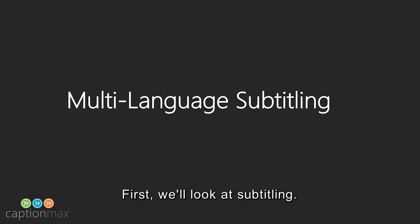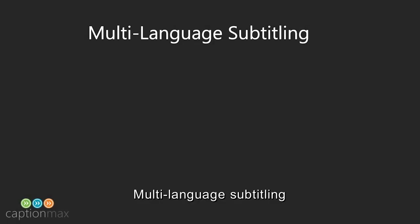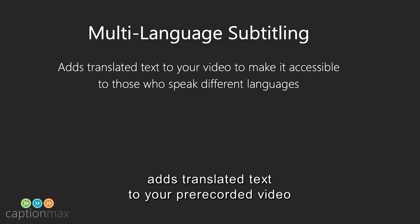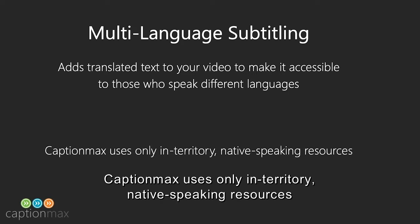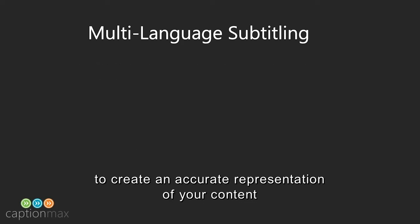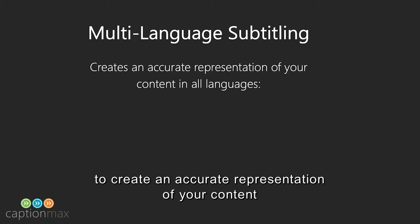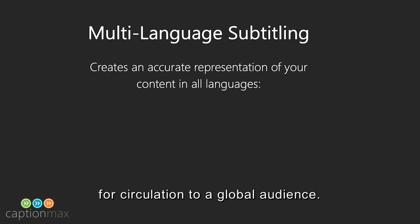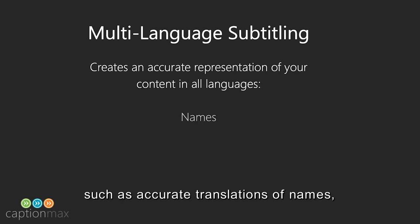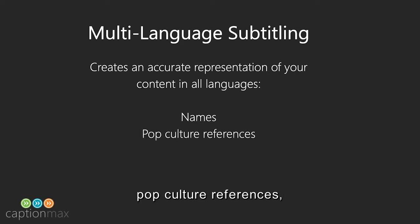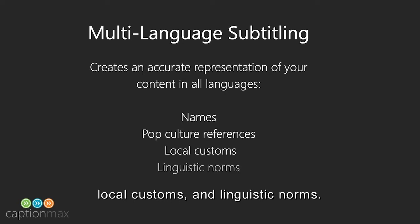First, we'll look at subtitling. Multi-language subtitling adds translated text to your pre-recorded video to make it accessible to speakers of most any language in the world. CaptionMax uses only in-territory native speaking resources to create an accurate representation of your content for circulation to a global audience. Quality localization takes into account factors that promote understanding, such as accurate translations of names, pop culture references, local customs, and linguistic norms.